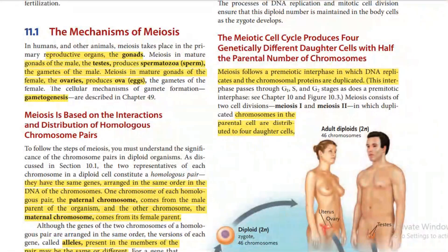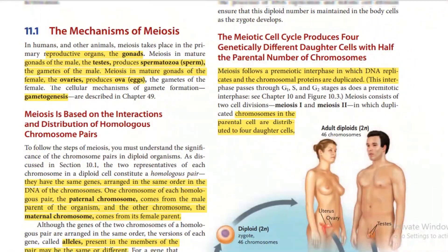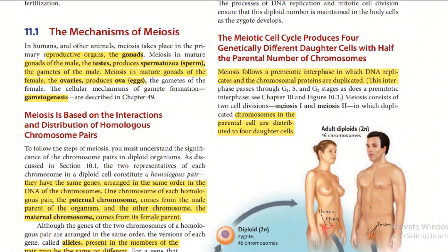Next is the mechanism of meiosis. In humans and other animals, meiosis takes place in the primary reproductive organs — these are the gonads. Meiosis in the mature gonads of the male, the testes, produces spermatozoa or sperm, the gametes of the male. Meiosis in the mature gonads of the female, the ovaries, produces ova or eggs, the gametes of the female.